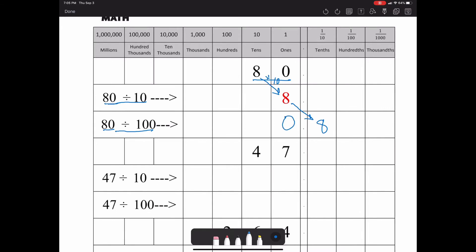Let's take a look at 47. Now 47 is a two-digit number. The same principle applies when you're dividing by 10 to both digits. Both digits are going to move one place value to the right.